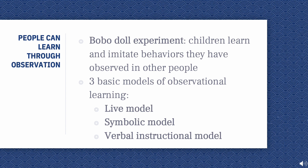The children imitated their aggressive behaviors. There are three basic models of observational learning. First is the live model, which involves an actual individual demonstrating or acting out a behavior. Second is the symbolic model, which involves real or fictional characters displaying behaviors in books, films, television programs, or online media. Third is the verbal instructional model, which involves descriptions and explanations of a behavior.